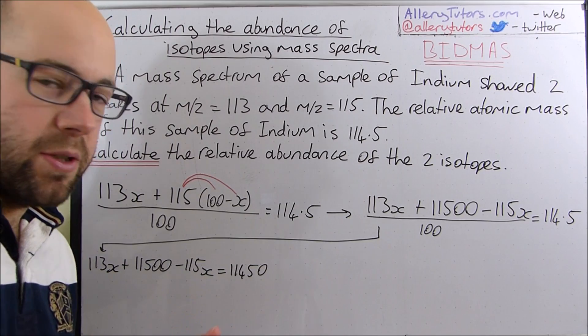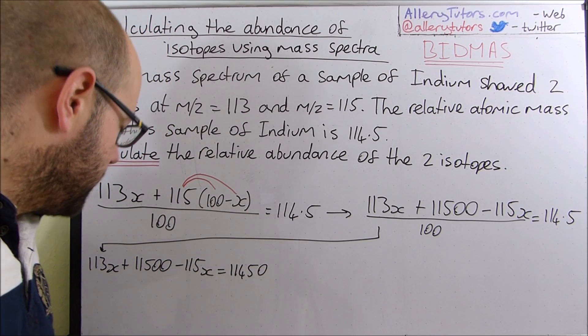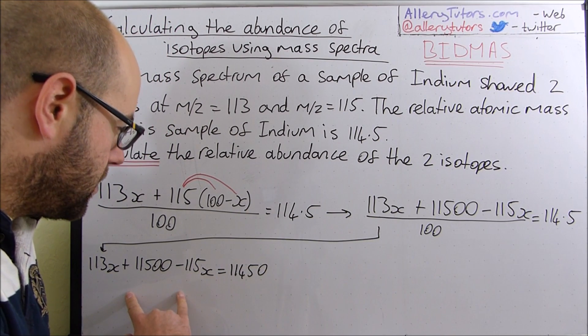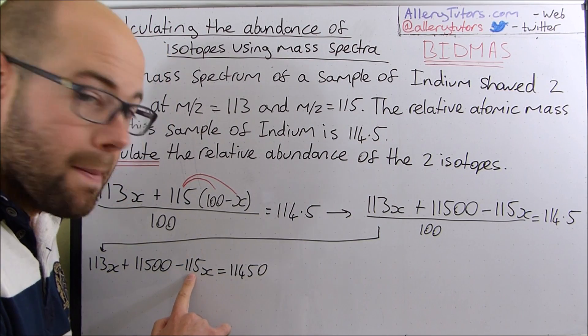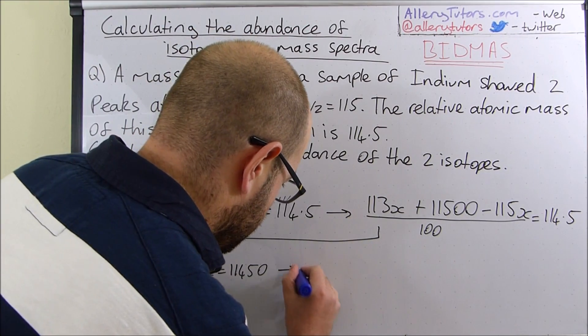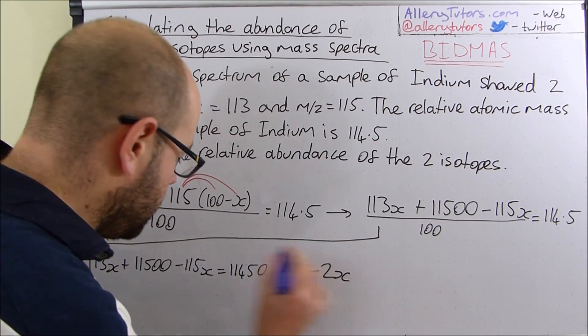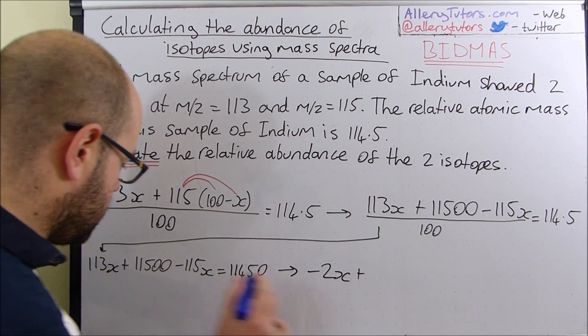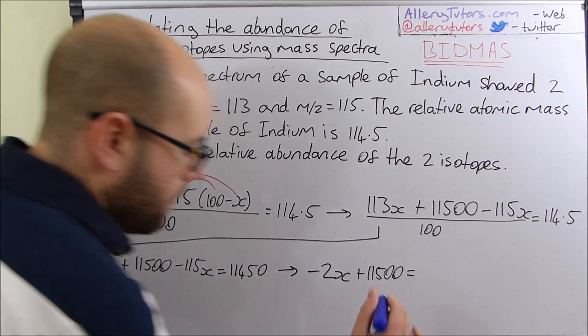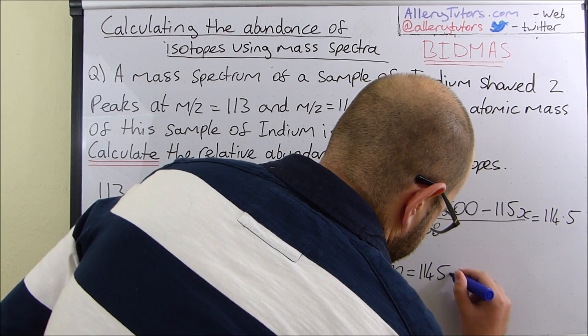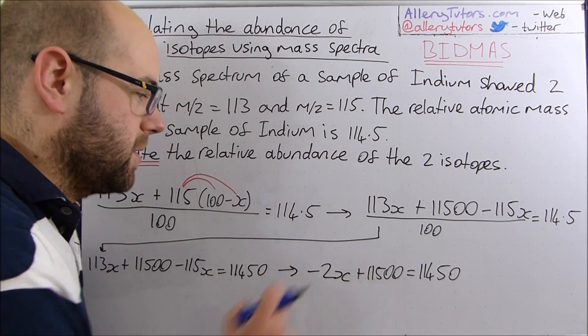Then what we have to do is collect like terms. This is very similar to algebra. We're going to take these two numbers and collect them together. 113X minus 115X is going to be minus 2X. So it's minus 2X. 113X minus 115X plus 11500 equals 11450. We're getting there, making this smaller. Just remember where we started from, it's getting a lot better.